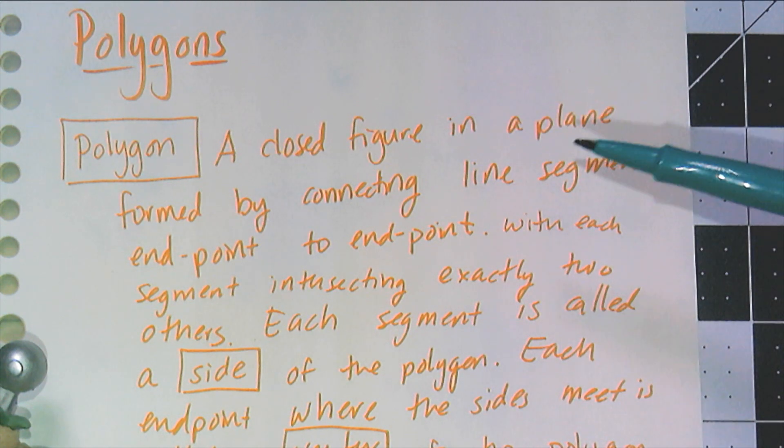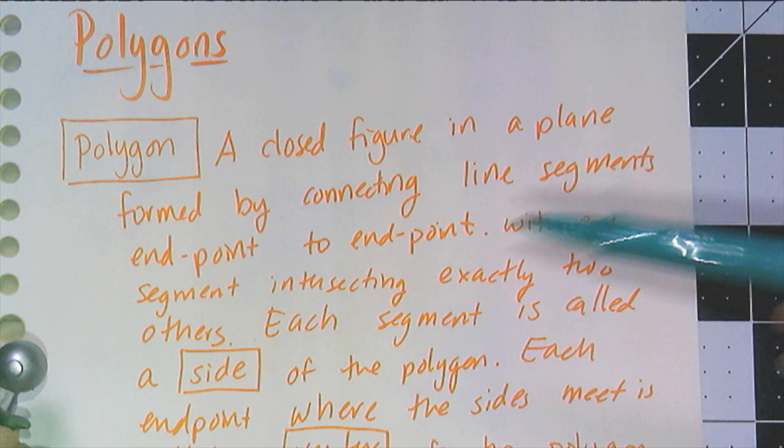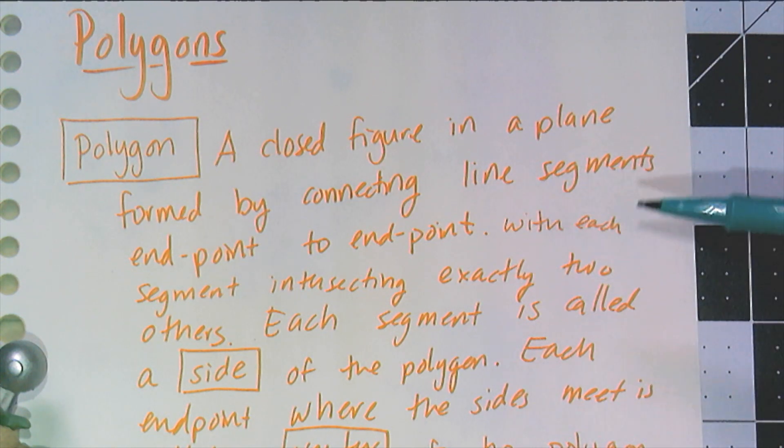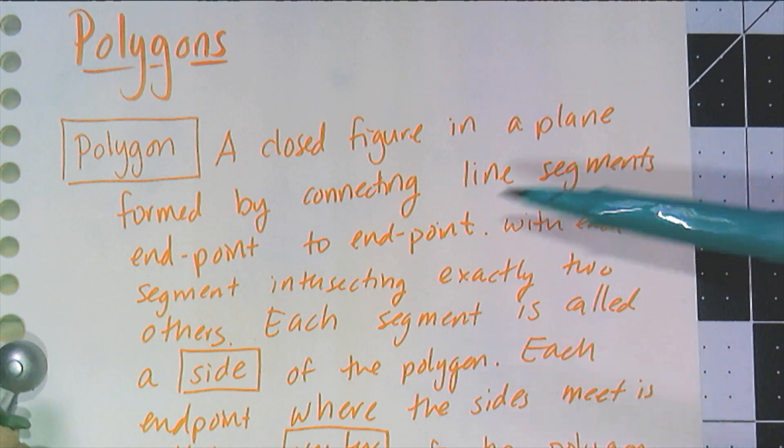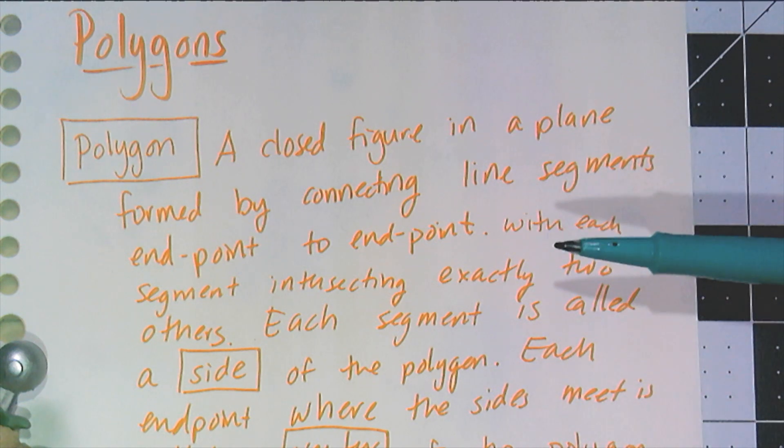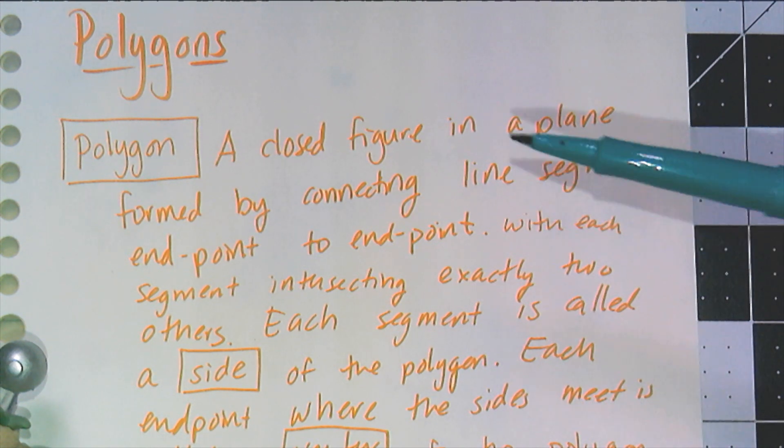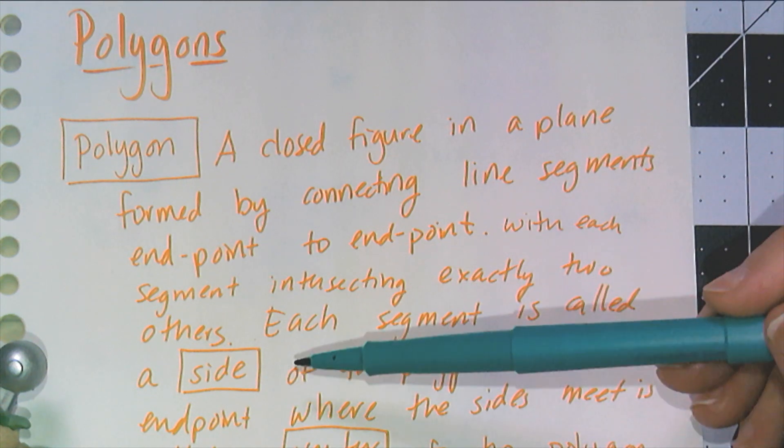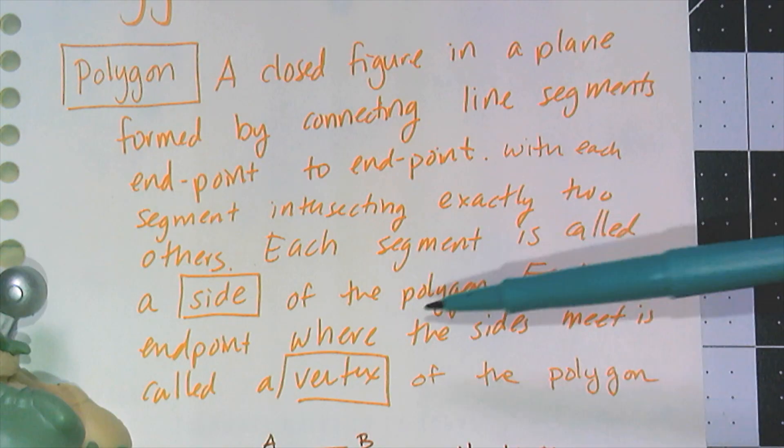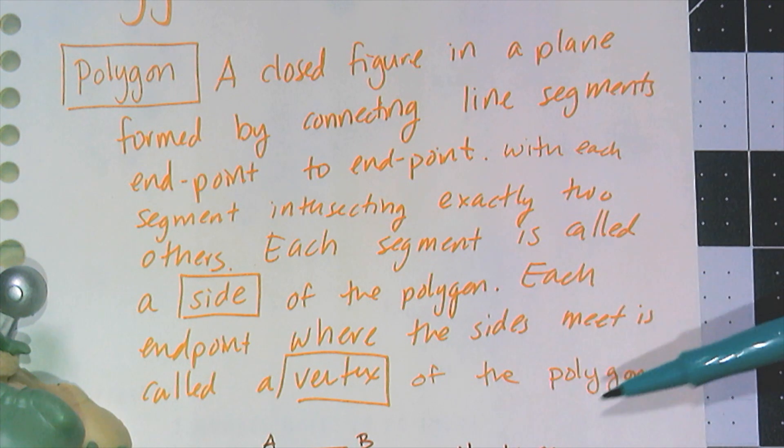A polygon is a closed figure in a plane created by connecting line segments point to endpoint with each segment intersecting exactly two other segments. Any one of the segments is a side of the polygon and the endpoints where the sides meet is called a vertex.